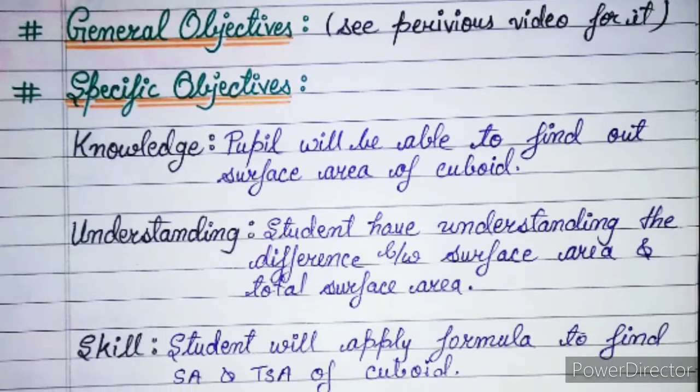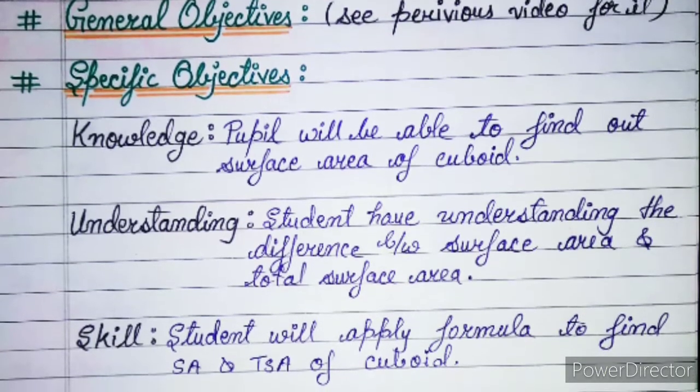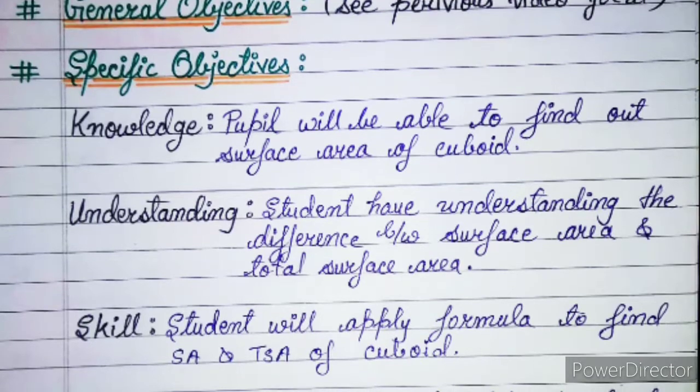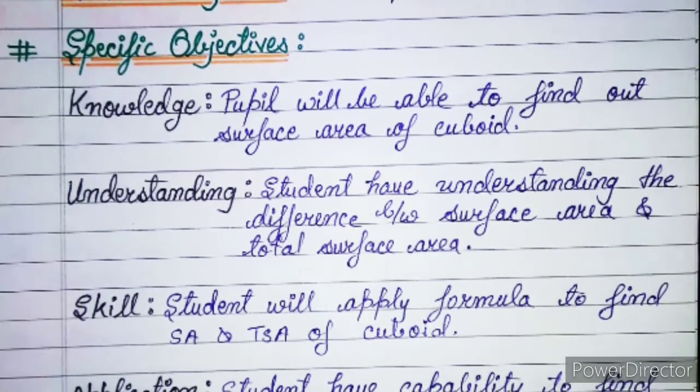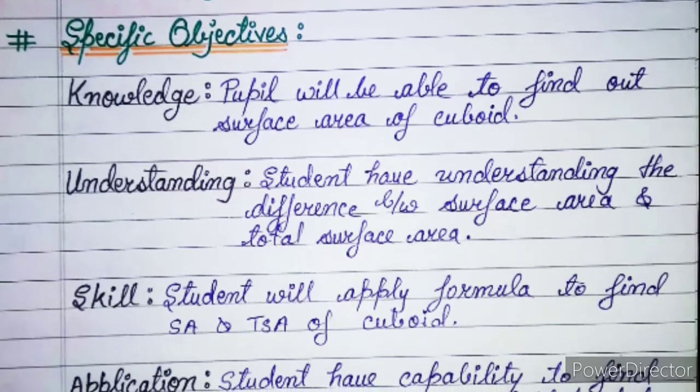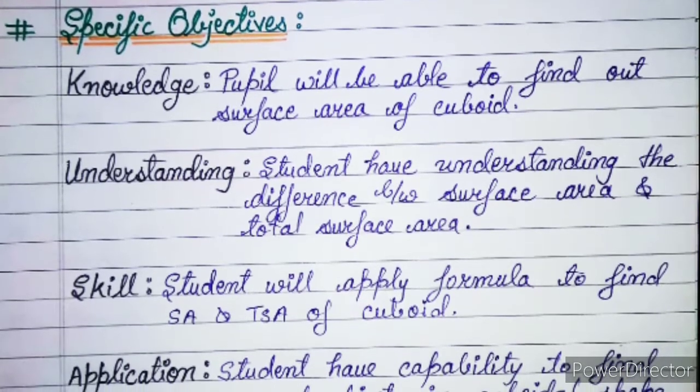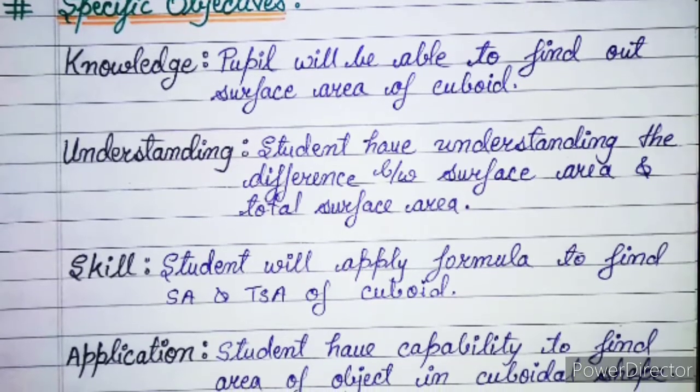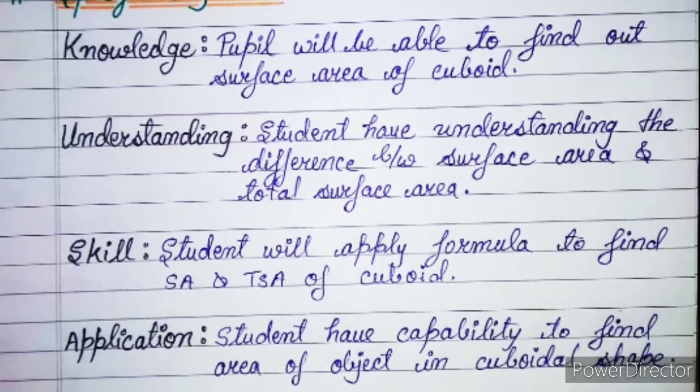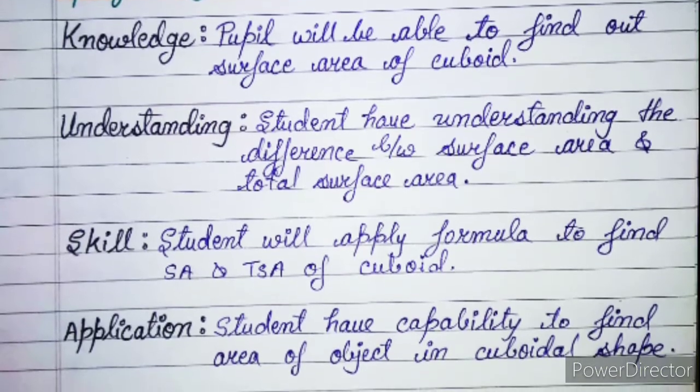After that, we will write specific objectives. We also divide the specific objectives in 4 categories: First is Knowledge. From this Lesson Plan or this Topic, what knowledge they will get, understanding, what they can understand, Skills, how to develop their skills, and where can we use them in real life.